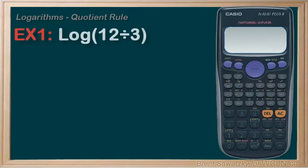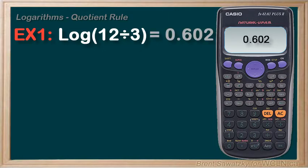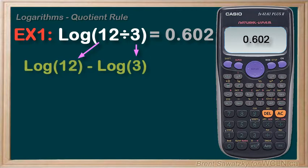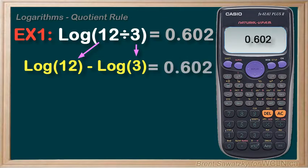Let's test this out. Example 1: log of 12 over 3, or 12 divided by 3. We could enter it directly into our calculator as log(12/3) or log(4) and we get 0.602, rounded. If we break this up using our new quotient rule we would have log 12 minus log 3, and into our calculator we get the same thing, 0.602 rounded.